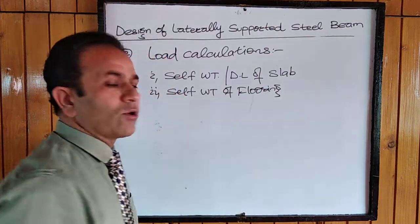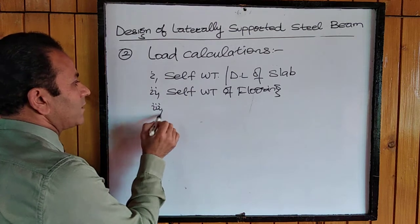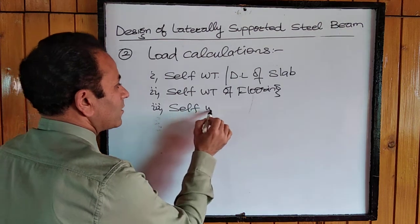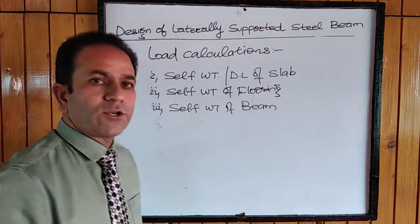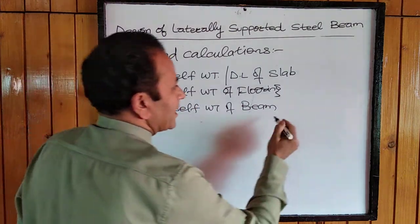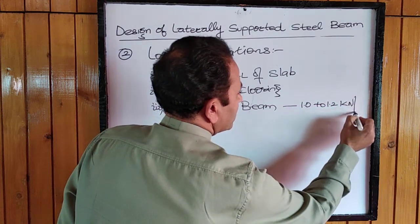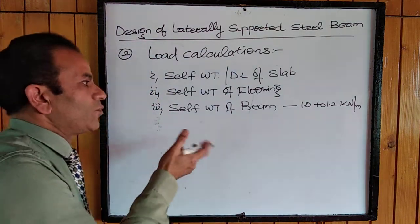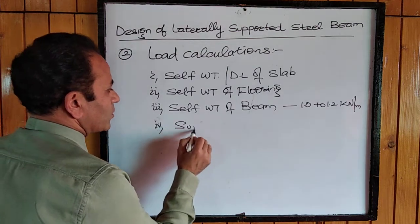The flooring material has its own weight, which comes under dead load. Then one more dead load is the self-weight of the beam itself. Initially we don't know which section we are going to use, so we may appropriately choose 1.0 to 1.2 kilo-newtons per meter as the self-weight of the beam. Later on, we will know the actual weight when we select the section.